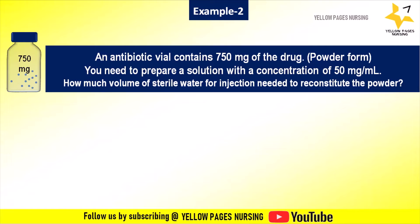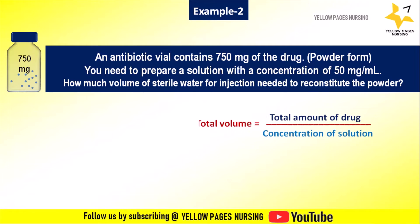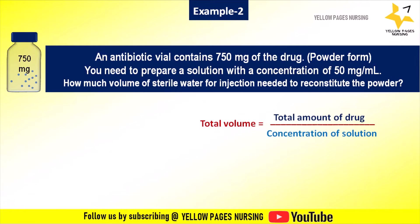Let's look at the second example. An antibiotic vial contains 750 milligram of the drug in powdered form. You need to prepare a solution with a concentration of 50 milligram per ml. How much volume of sterile water for injection is needed to reconstitute the powder? The formula is: total volume = total amount of drug divided by concentration of solution.